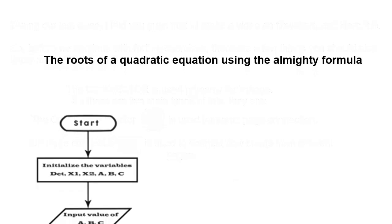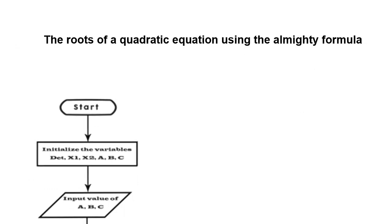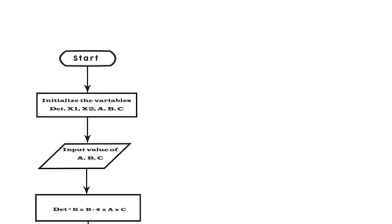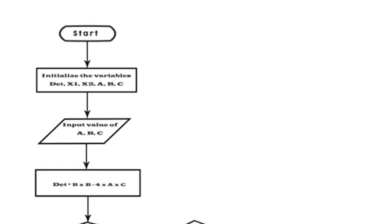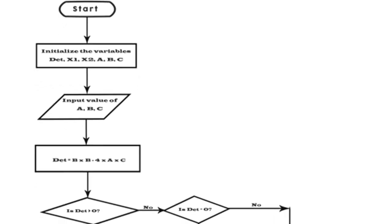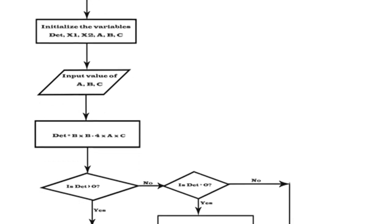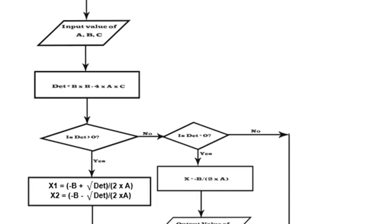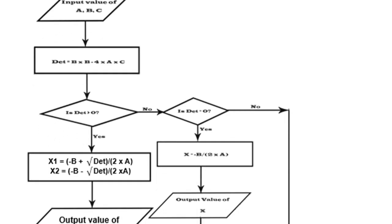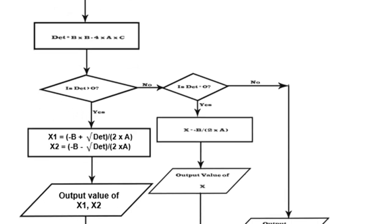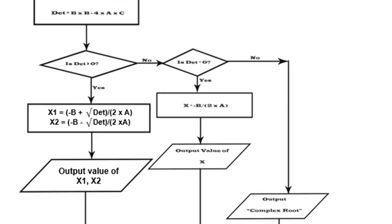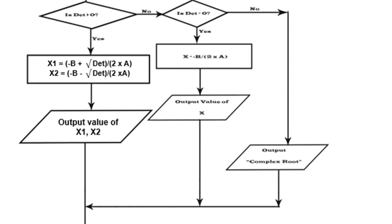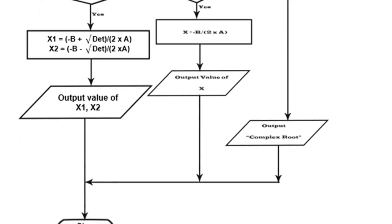Here is a typical example of a flowchart without a page connector. This is a quadratic equation solved using the almighty formula. The flow lines link the pathways. This does not follow a particular syntax, but you have to make sure that any formula you put in is correct. Just follow the processes and get down through the pathway.